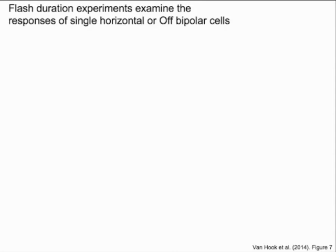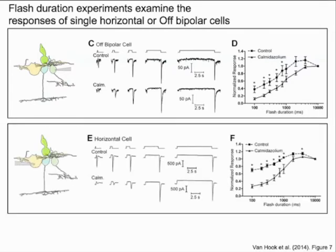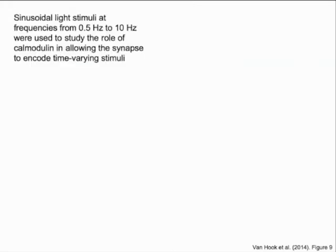To test this, we recorded the responses of individual off-bipolar cells or horizontal cells to flashes of varying duration. Here, the transient inward current at light offset represents release of glutamate from cones as they depolarize with the transition to darkness. This was inhibited by the calmodulin inhibitor calmitazolium, especially following shorter flashes. These results indicate that calmodulin-dependent quickening of replenishment enhances the ability of the cone synapse to signal light offset during rapidly changing conditions.